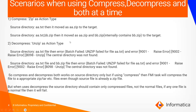Scenarios when using compress, decompress, and both at a time. For example, if you are using only compress at the action step with ZIP as the action type, and the source directory has a.txt, then a.txt will be moved as a.zip to the target. If the source directory contains both a.txt and bb.zip, then a.txt moves as a.zip, and bb.zip will be zipped again as bb.zip — so bb.zip will internally contain another bb.zip. All files in the source directory will be compressed.